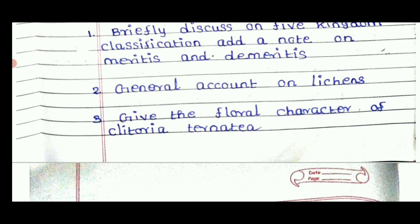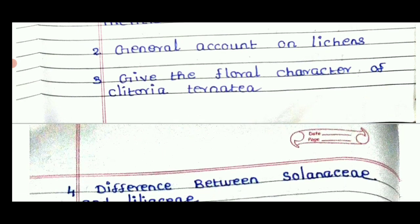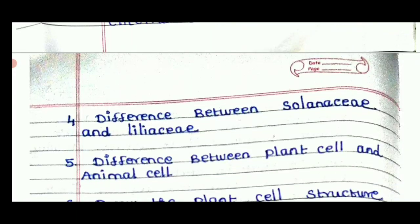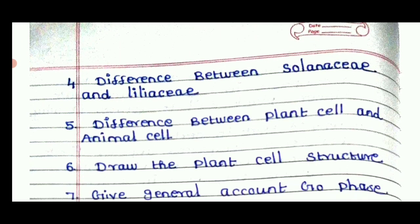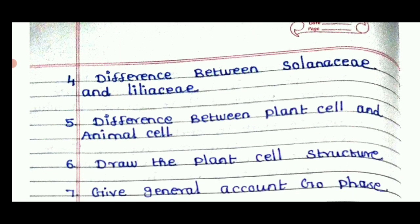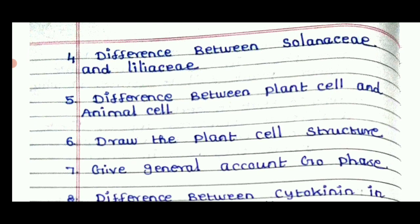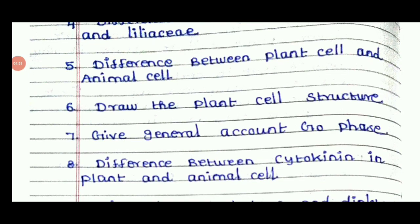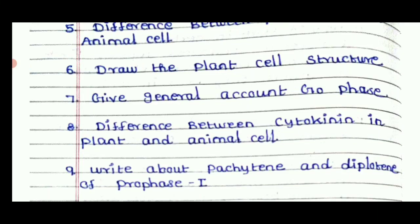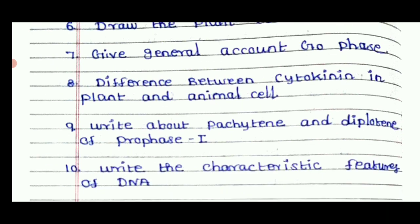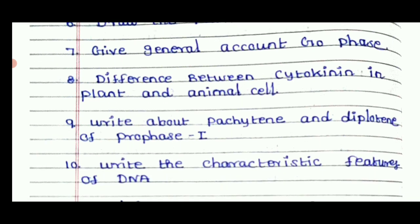This is one of the five-mark questions — give the floral characters of Clitoria ternatea. The difference between Solanaceae and Liliaceae. Difference between plant cell and animal cell. Draw the plant cell structure. Give the general account of G0 phase. Difference between cytokinesis in plant cell and animal cell. Write about the pachytene and diplotene of prophase.